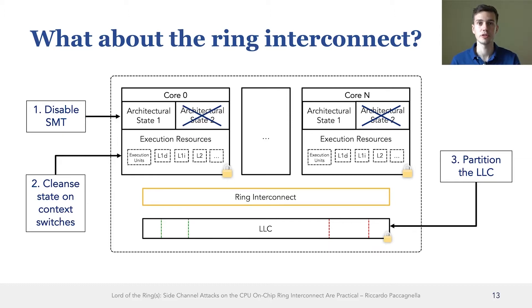The ring interconnect is this component of the processor that allows different cores and last-level cache slices to communicate with each other. This component hasn't been exploited in the past for microarchitectural side-channel attacks for two main reasons. The first one is that very little is known about how it works. And the second one is that it's a very coarse-grained resource. So up until today, it wasn't clear whether side-channel attacks on this component were even possible.